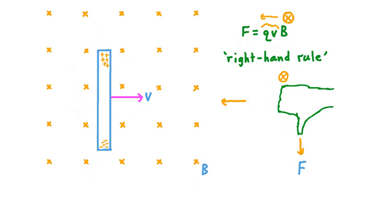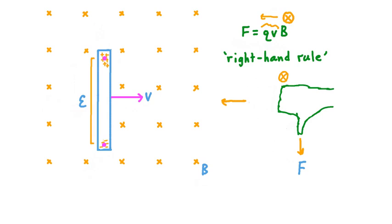So we have a separation of charges across the ends of our conductor. If we were to measure the electric potential in the middle of the positive charges and compare it to the electric potential in the middle of the pile of negatives, we would find that there is a difference. Wherever a potential difference is set up, there is a capacity to move charge. A potential difference is also called a voltage, or an electromotive force — EMF for short — typically symbolized using the Greek letter epsilon. An EMF is generated across this conductor simply by moving it at some constant speed through a uniform magnetic field.